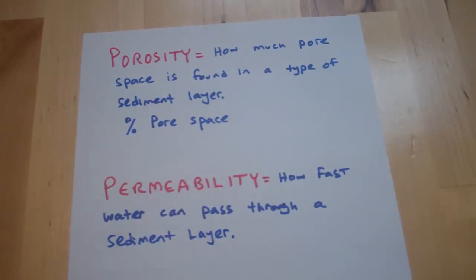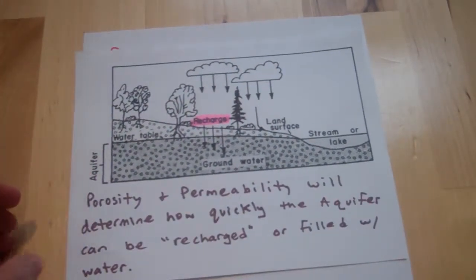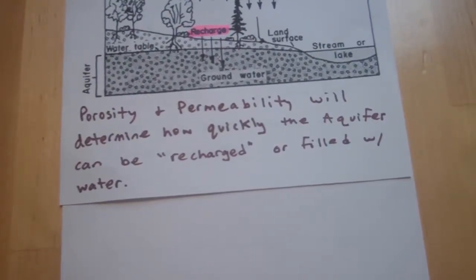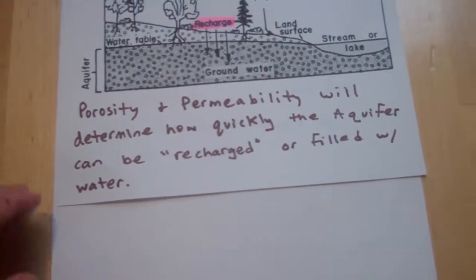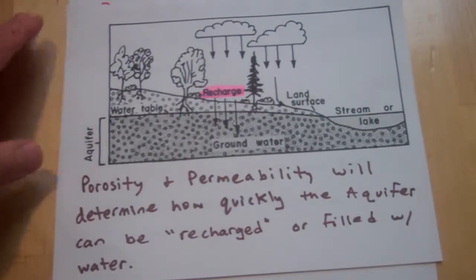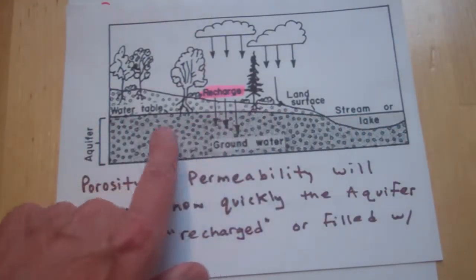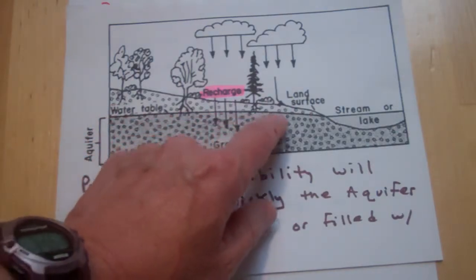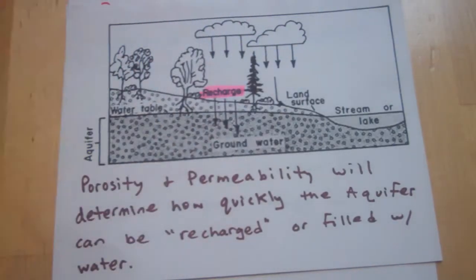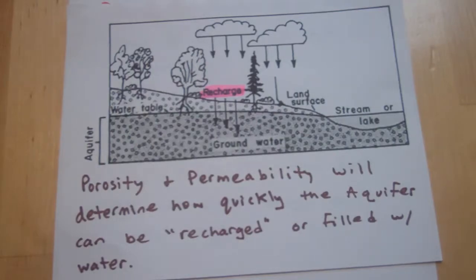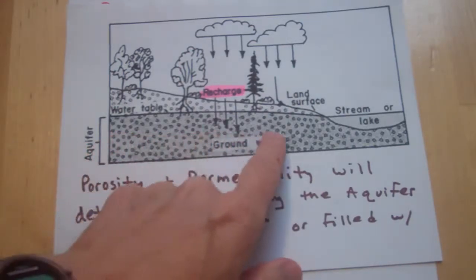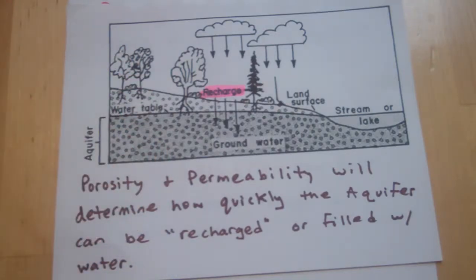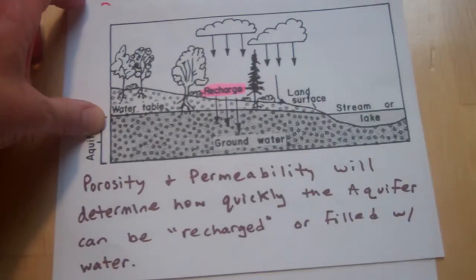Permeability is how fast water can flow through a sediment layer. Both porosity and permeability are going to determine how quickly an aquifer can be recharged, or refilled with water. Here we have a landscape where the dark gray is groundwater, you can see the water table even with the lake, and precipitation is recharging the groundwater.